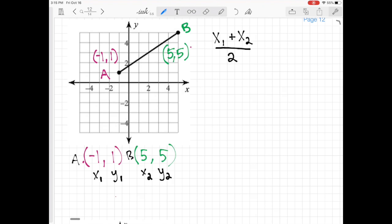So let's start pulling what we know. My x1 is negative 1, and my x2 is 5. Then I'm going to add them together and divide by 2. So negative 1 plus 5 is 4, divided by 2.